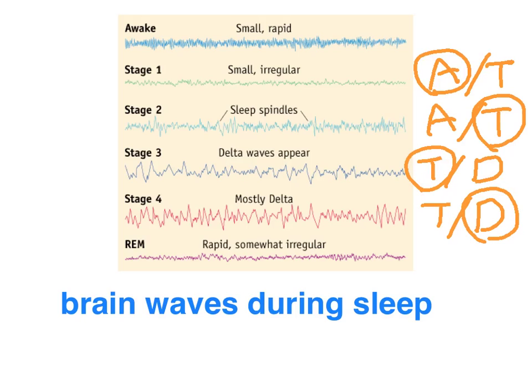REM sleep features beta-like brain waves, as reflected by the significantly higher frequency and lower amplitude brain waves, indicating a higher level of electrical activity as a result of dreams.